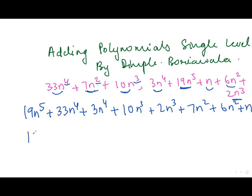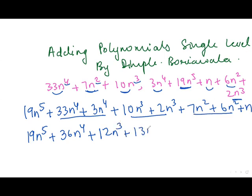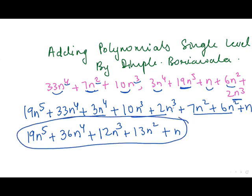So 19N^5, then this is 36N power 4, this is 12N power 3, this is 13N square plus N. This will be my final answer.